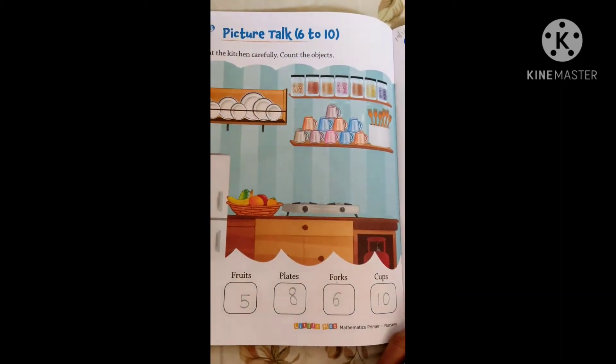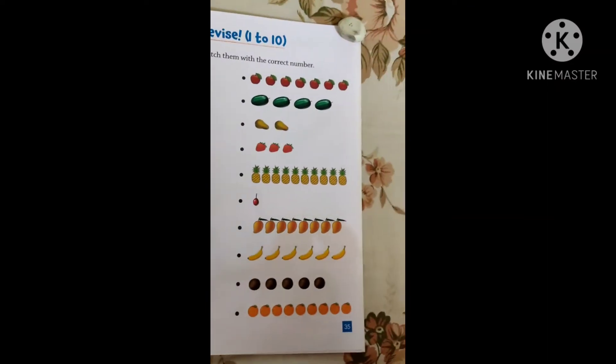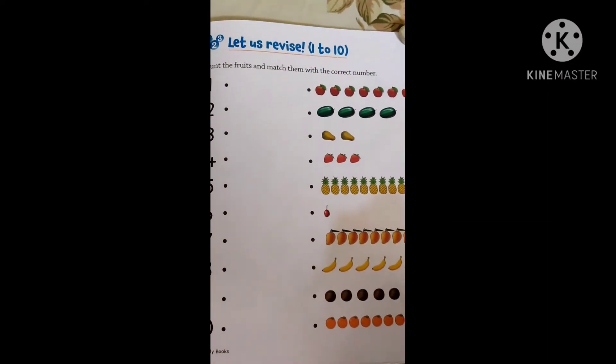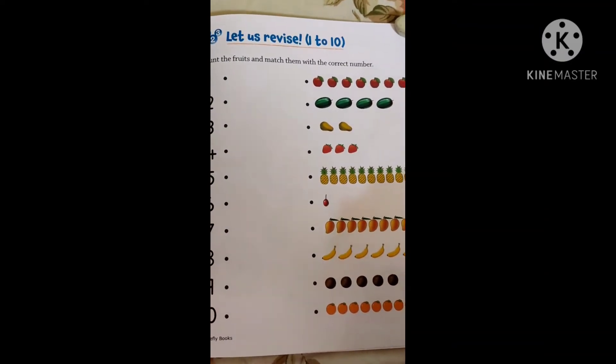So like this we have completed this picture talk 6 to 10. Now come to the next page, page number 35. Let us revise 1 to 10. Now what we are going to do? We are going to revise 1 to 10.